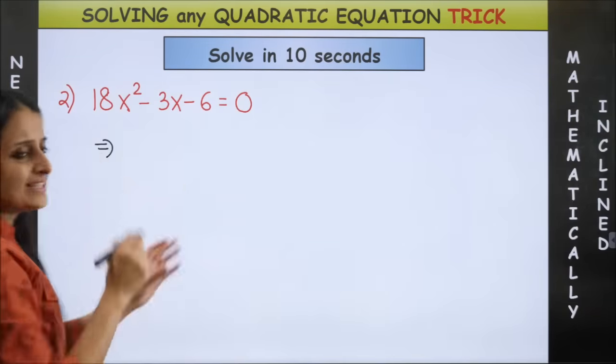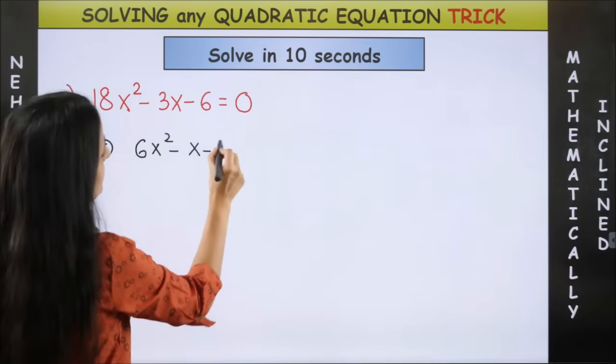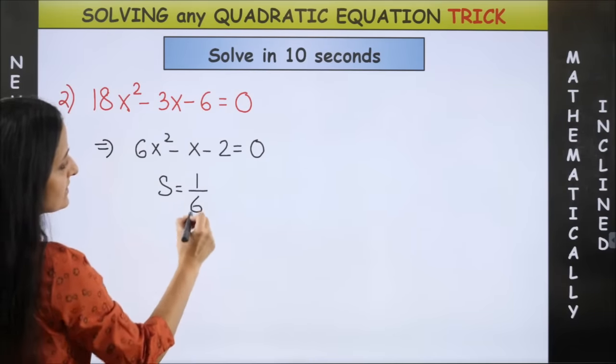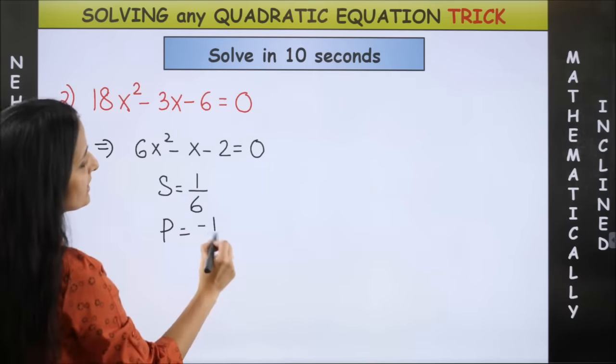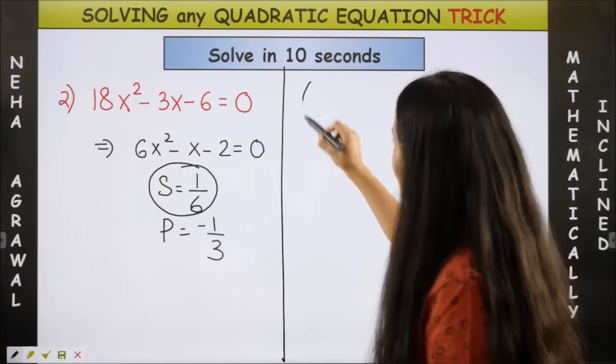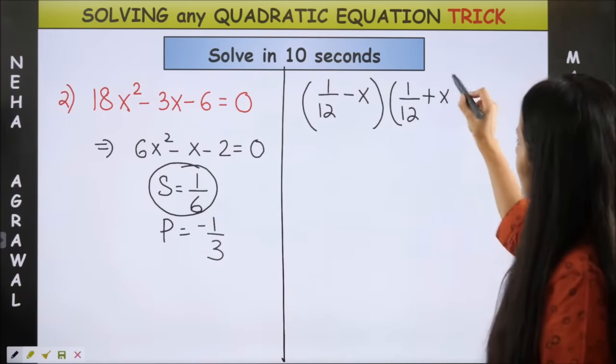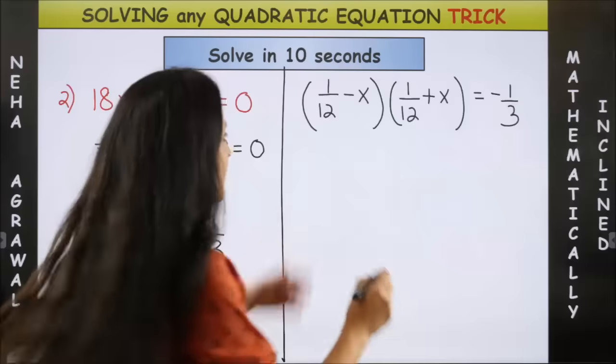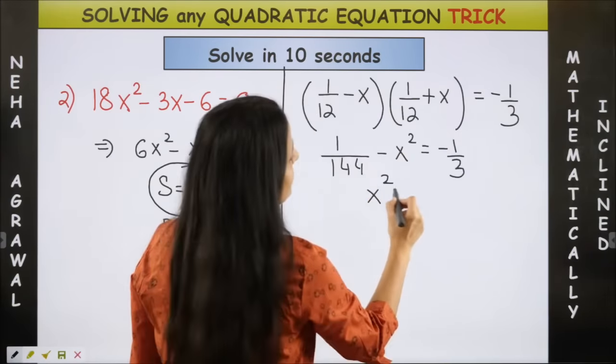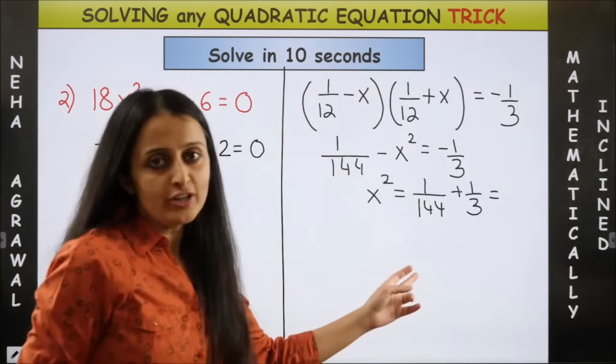Now first of all let's just simplify this one right. If you take three common this anyway just becomes this. Now sum is again minus of this so 1 by 6 product is minus 2 by 6 so minus 1 by 3. All you need to do is take its half. Yes just take its half so that will be 1 by 12 minus x and 1 by 12 plus x is equal to minus 1 by 3. That's it. Now it is 1 upon 144 minus x squared is minus 1 by 3. So x squared is